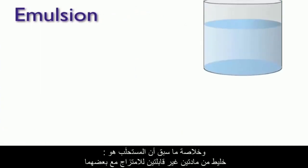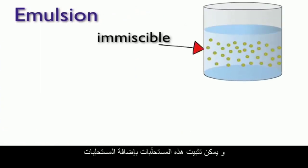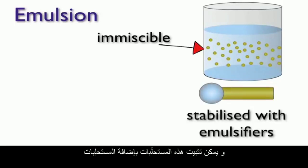In summary, an emulsion is a mixture of two substances that are immiscible with one another, and the emulsion is stabilized by adding an emulsifier.